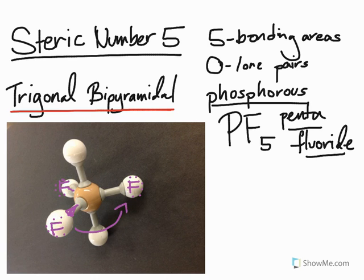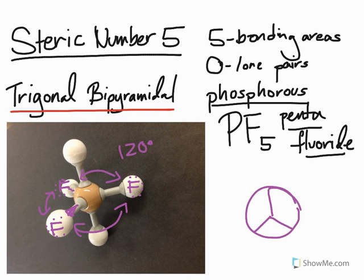Remember, these are three-dimensional structures. The bond angles between each one of these three fluorine atoms, if you actually take a look at it from the top, is 120 degrees. Think about a circle being divided into three equal parts, so one, two, and three. Each one of these arcs is 120 degrees, and the name of this position is called the equatorial.